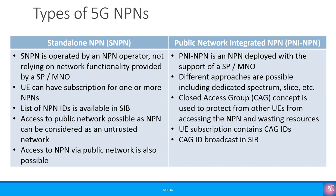The second type of NPN is the public network integrated NPN or PNI-NPN. PNI-NPN is an NPN deployed with the support of a service provider or mobile network operator — different approaches are possible including dedicated spectrum, slicing, etc. The closed access group or CAG concept is used to protect from unauthorized UEs accessing the NPN and wasting resources. If a UE is unauthorized, it shouldn't even start the RRC procedure, as that wastes critical resources of a private network. UE subscription contains CAG IDs — stored in the SIM card — and the CAG ID is broadcast in the SIB.